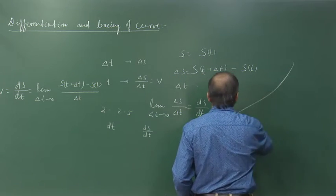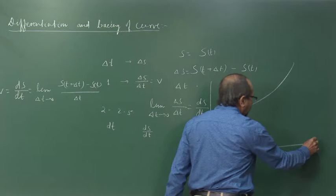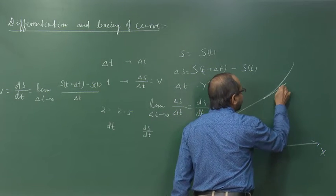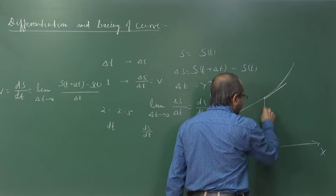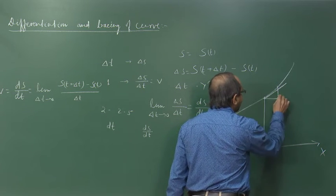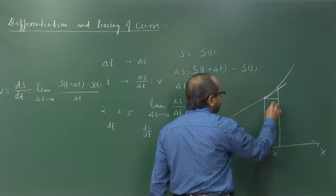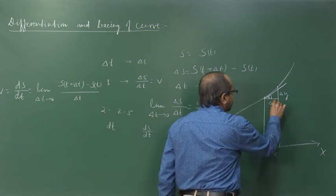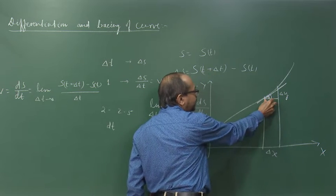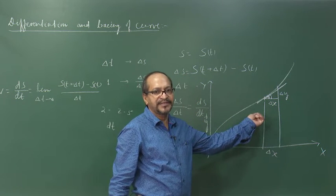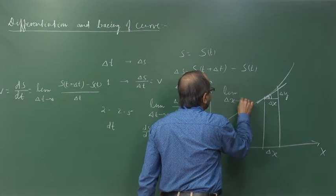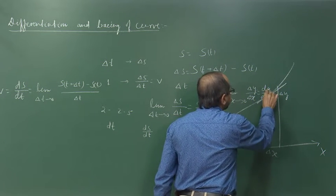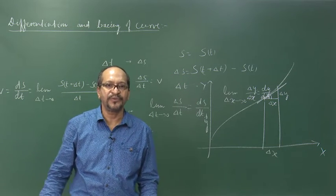Suppose we have a curve in the Cartesian coordinate system with x and y axes, and we want to find the slope of the tangent at exactly one point. We consider an interval delta x, so that y changes through delta y, and tan theta gives you delta y by delta x. But to get the tangent at exactly that point, you reduce delta x tends to 0, so that limit delta x tends to 0 of delta y by delta x gives dy by dx — the derivative of y with respect to x.